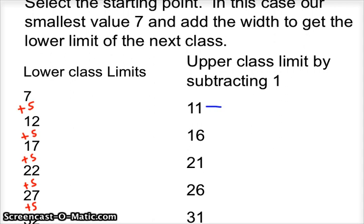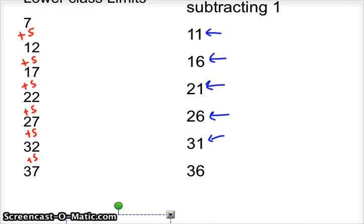11 came from 12 minus 1. 16 is 17 minus 1. 21 is 22 minus 1, and on down the line until we get all 6 of our classes covered. There's our upper limits.